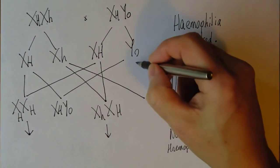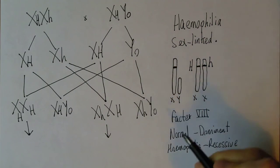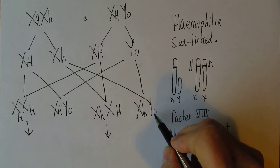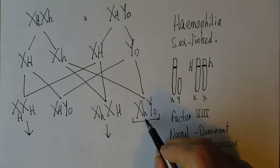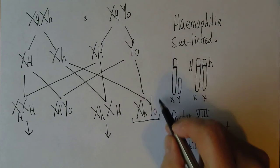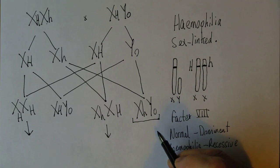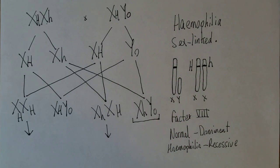The fourth possibility is X(h) from the mother and Y from the father, giving us X(h) Y(0). Unfortunately, this boy does not have a copy of the normal dominant gene, therefore he cannot produce Factor 8, and therefore he will suffer from haemophilia. So very often in sex-linked genetic characteristics, it's the women who carry the condition, but it's the boys who suffer from it — because they have no second opportunity to carry a copy of the gene on their small Y chromosome.